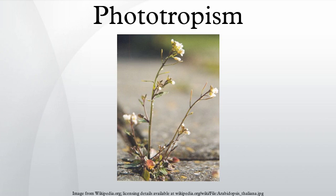The Cholodny-Went hypothesis, developed in the early 20th century, predicts that in the presence of asymmetric light, auxin will move towards the shaded side and promote elongation of the cells on that side to cause the plant to curve towards the light source. Auxins activate proton pumps, decreasing the pH in the cells on the dark side of the plant. This acidification of the cell wall region activates enzymes known as expansins, which break bonds in the cell wall structure, making the cell walls less rigid.